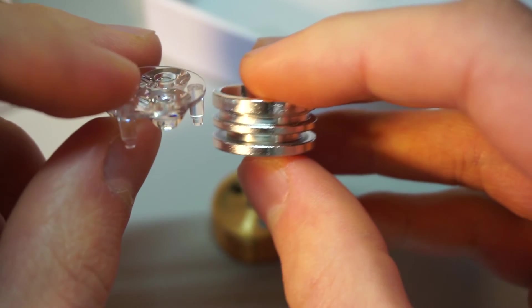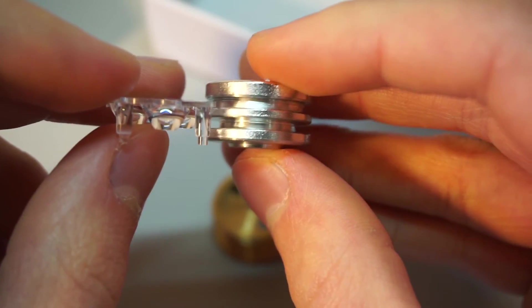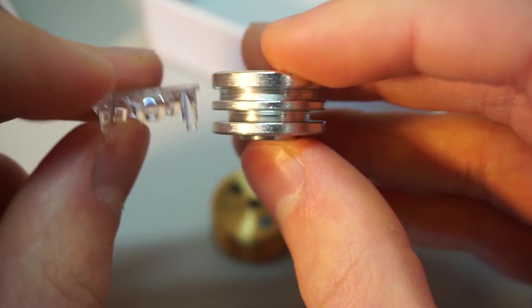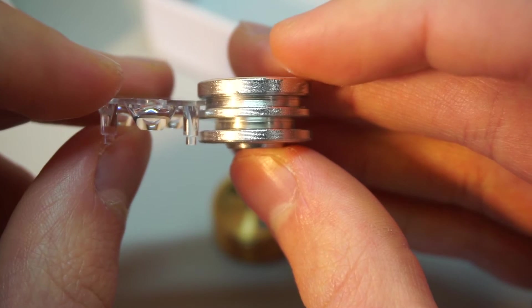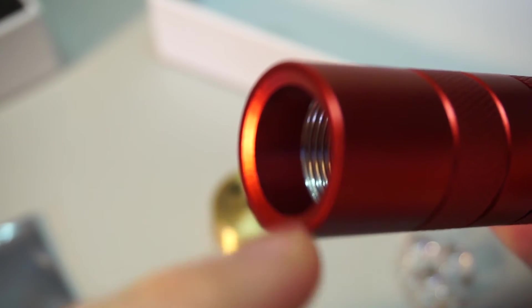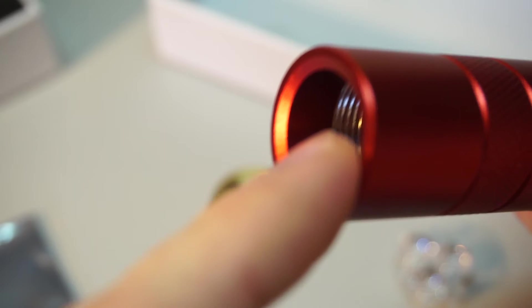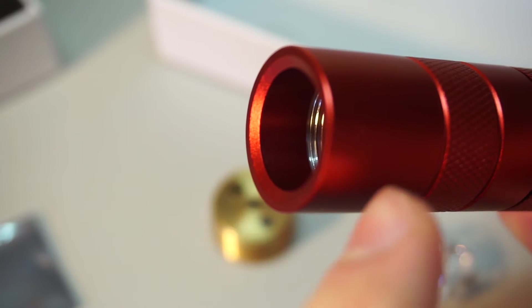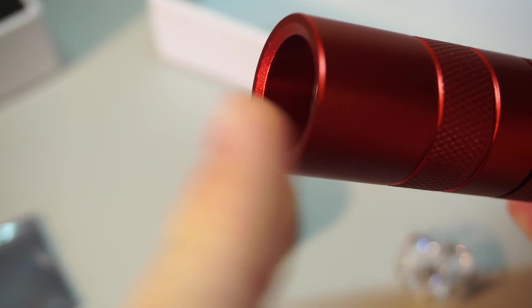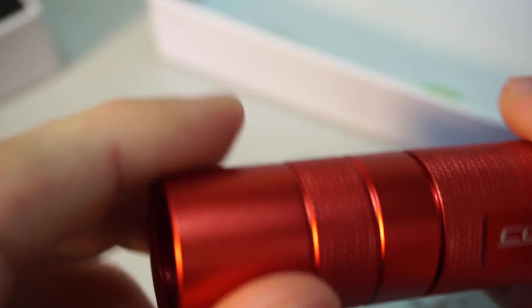The reason you need a spacer is because the TIR optic that's used with the triple LED board is shorter than the stock Convoy S2 Plus reflector. As you can see on the body here, it's not threaded all the way through, so if you installed the LED board without a spacer, there would be a gap between the end of the optic and the end of the host.